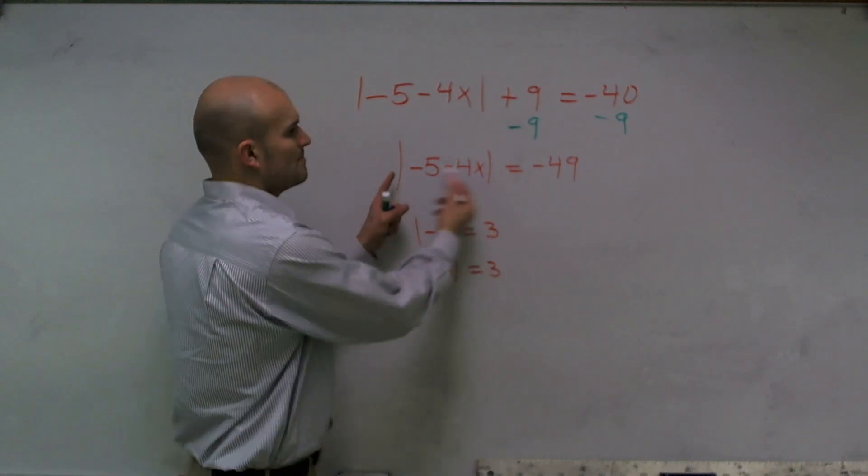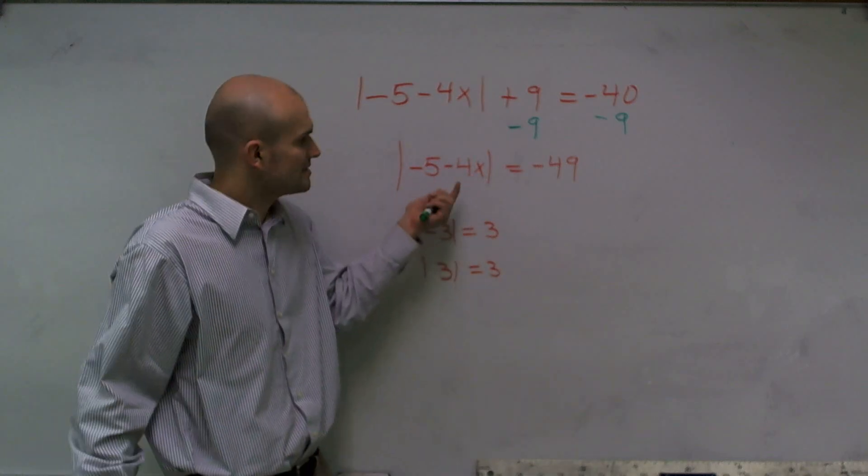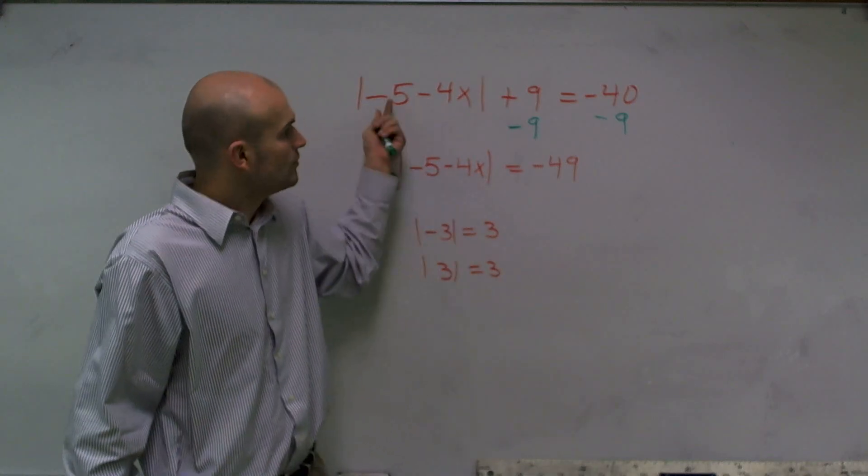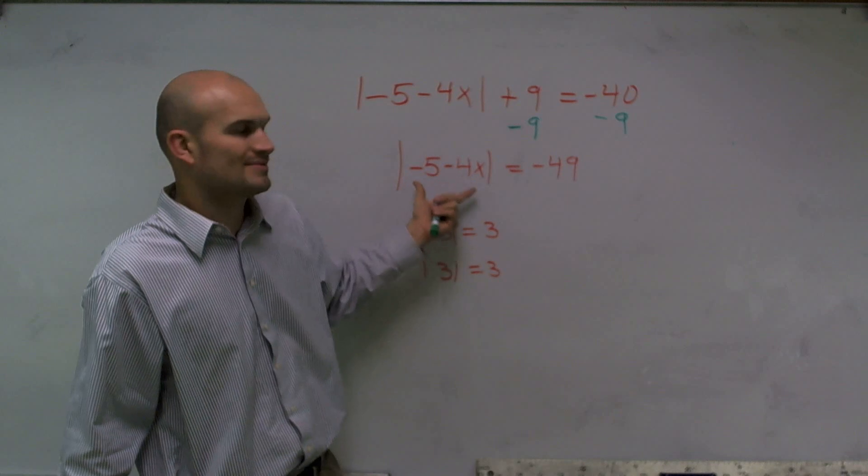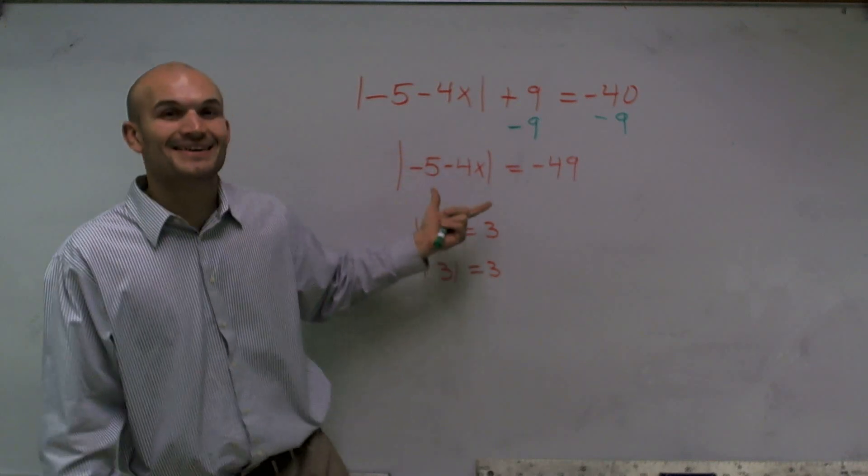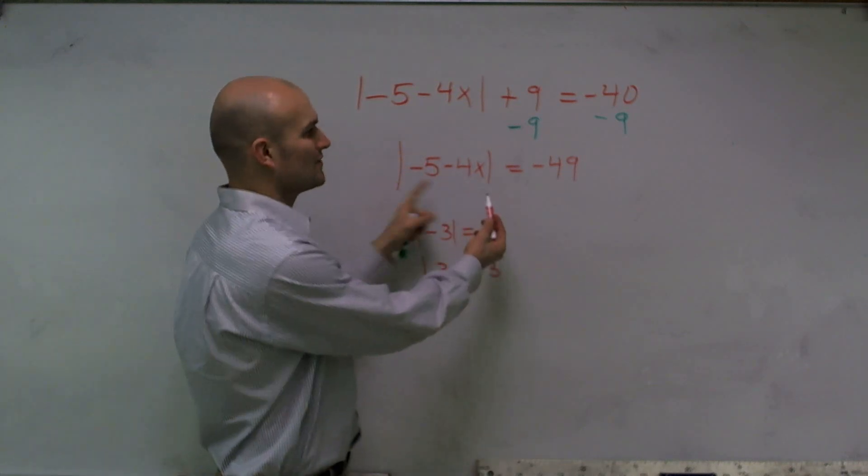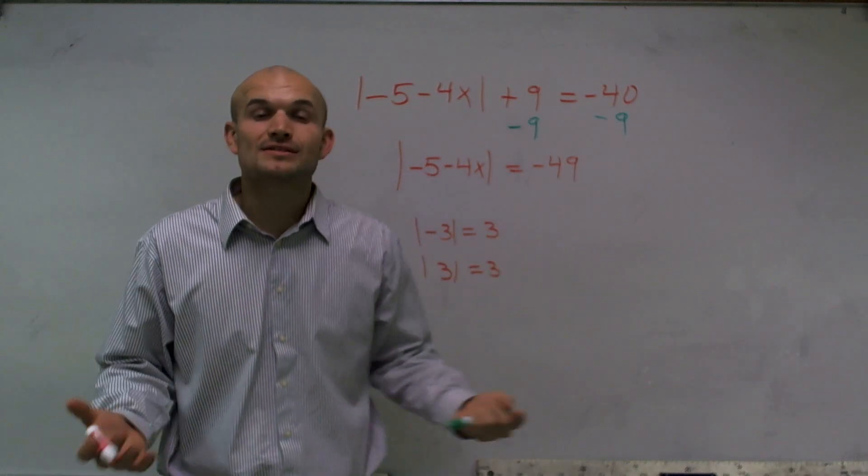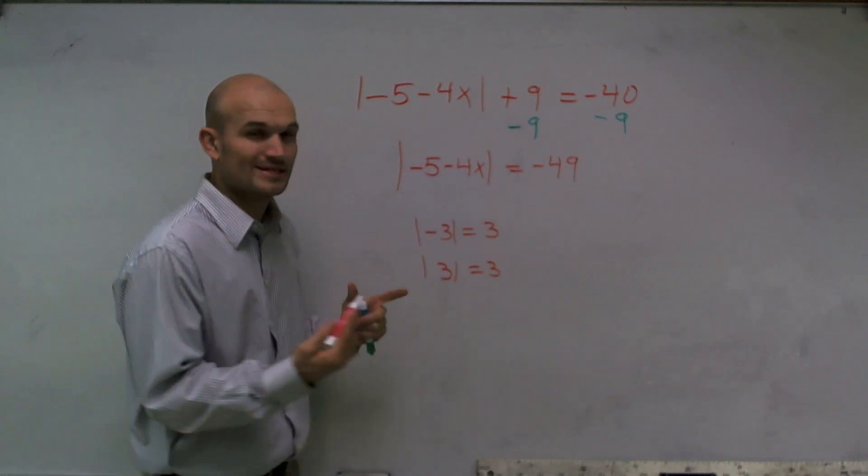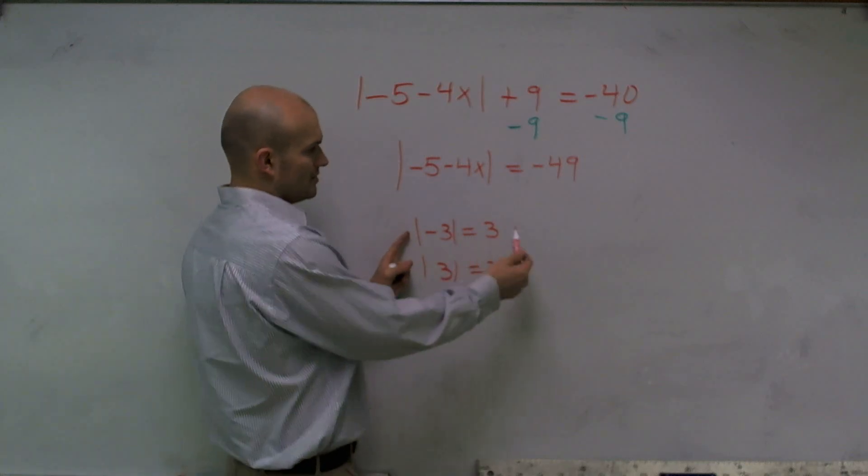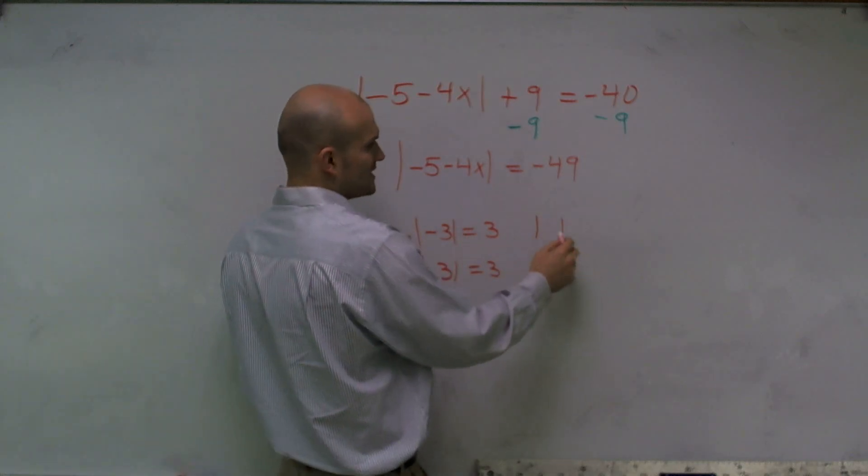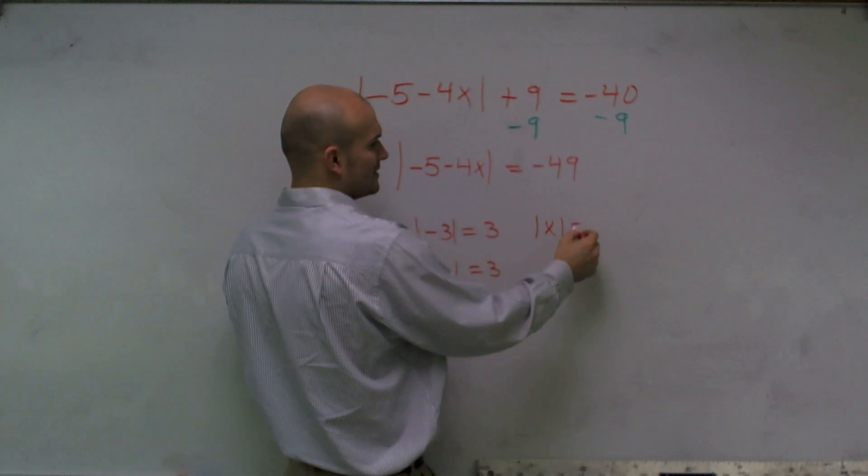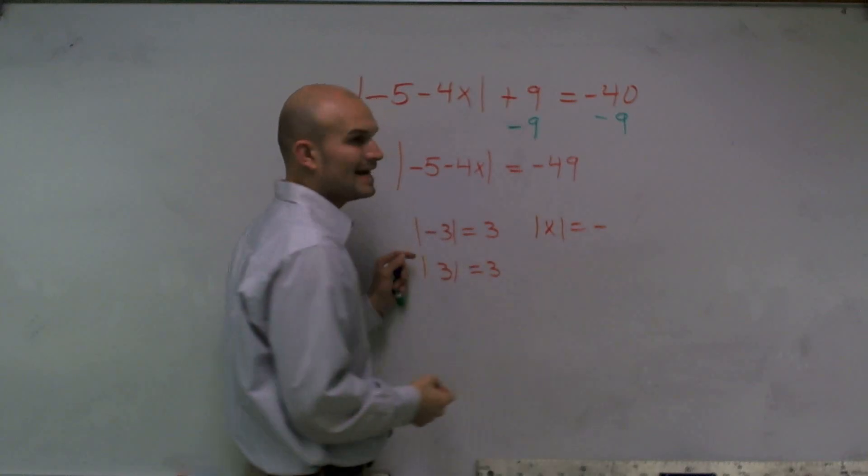So it doesn't even matter what's inside this inequality. When you solve and you get your absolute value function by itself and you see that it's equal to a negative number, you know that we're not going to have a solution. And again, I'll remind you, the reason why is there's no such thing as an absolute value of anything equaling a negative number.